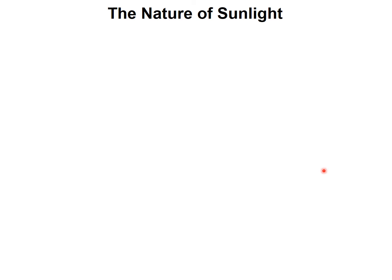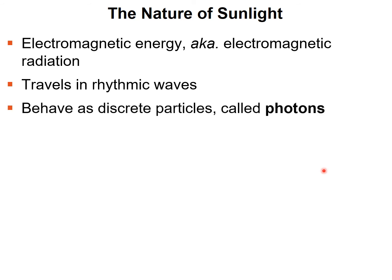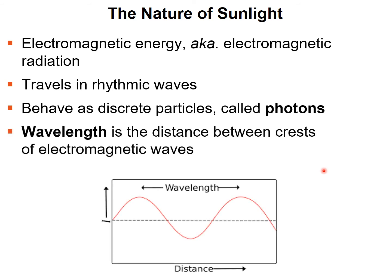Before discussing the details, it's important to understand the nature of sunlight. Light is electromagnetic energy, or electromagnetic radiation, and can be placed on a scale called the electromagnetic spectrum. Light travels in waves in a rhythmic, regular fashion — sometimes the waves shorten and sometimes lengthen. Sunlight can also act like particles called photons, analogous to electrons.